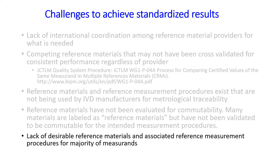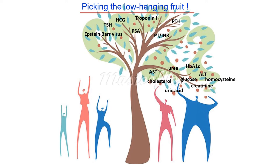Unfortunately, the number of measurands that can be standardized is fairly limited in relation to the thousands of different measurand tests performed in laboratory medicine. The reasons for this are the lack of clearly defined measurands, reference methods, and/or reference materials. Only 180 measurands have at least one reference material listed in the JCTLM database, and only 160 measurands have at least one reference measurement procedure listed. For measurand standardization projects, we have been picking the low-hanging fruit — the relatively easy measurands to work on. Standardization of measurands located higher on the measurand complexity tree, such as PSA, PTH, or PT/INR, along with hundreds of others, are technically more difficult and costly to achieve.